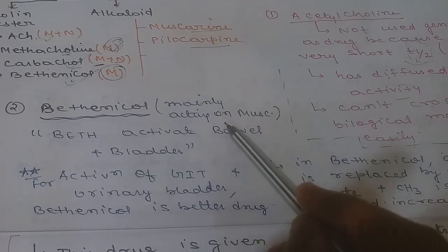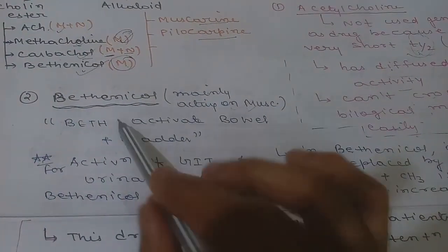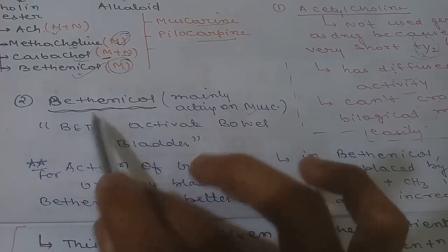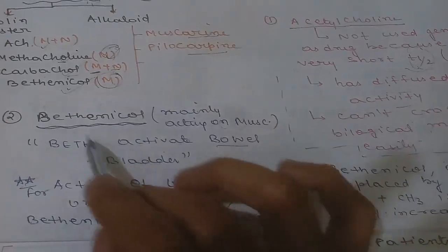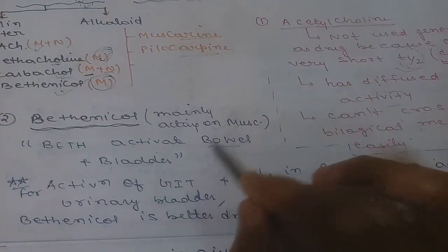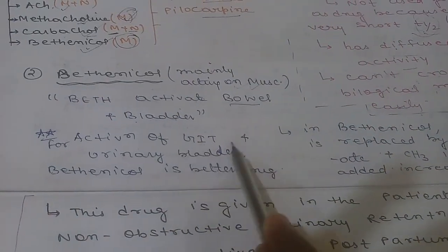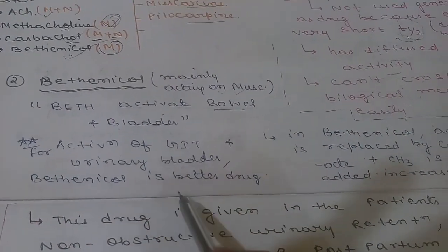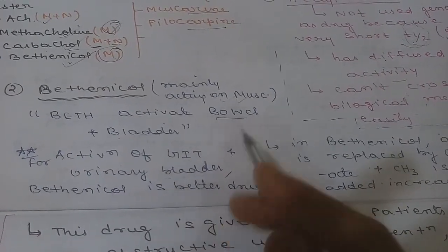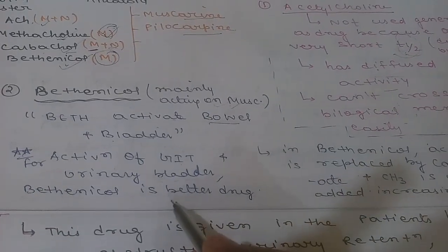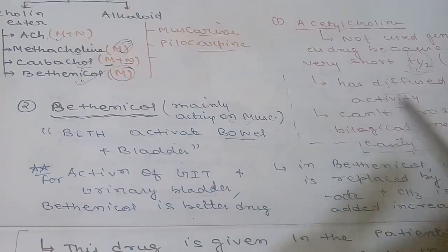Bethanechol mainly acts on muscarinic receptors. One key point: bethanechol activates bowel and bladder movement. It is mainly responsible for activation of the GIT and urinary bladder movement by activating the receptors. Acetylcholine can also do this, but we do not use acetylcholine for the reasons already discussed.